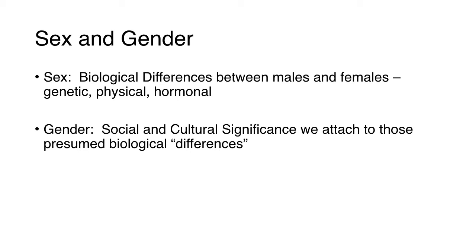Two important definitions you need to know are the difference between sex versus gender. When a sociologist uses the word sex, they're talking about the biological differences between males and females — the genetic, physical, and hormonal differences between women and men. What's interesting is that many biologists and neuroscientists are beginning to demonstrate that there's not just two genders. One biologist, Anne Fausto-Sterling, argues that there are at least five genetically different kinds of genders.